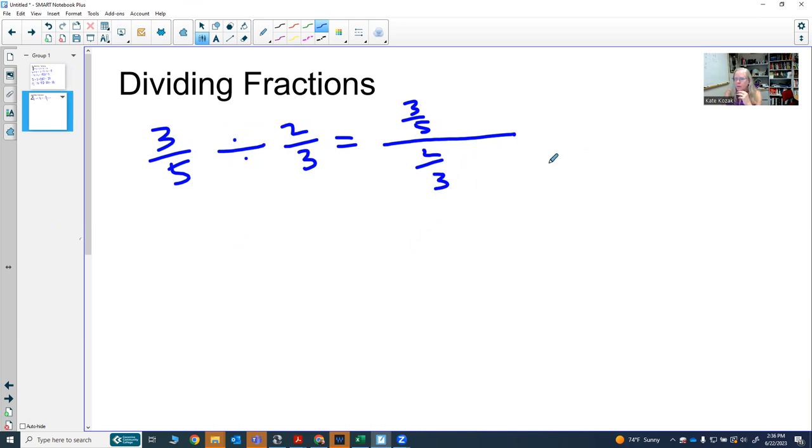This is known as a complex fraction because we have a fraction inside of a fraction, and it's not fun to look at. We would like to simplify this and one way to simplify this is to multiply the numerator and denominator of the large fraction by the common denominator of the smaller fractions inside the large fraction.